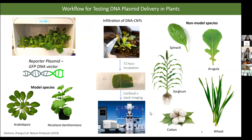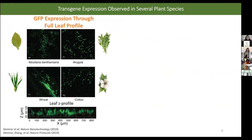Here are some exemplary results in Nicotiana benthamiana (tobacco), arugula, wheat, and cotton — representing a variety of different tissue types and morphologies — where we see green fluorescent protein expression across these species.